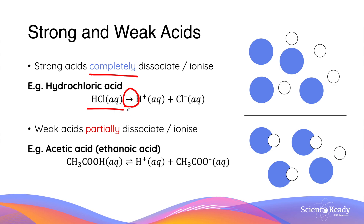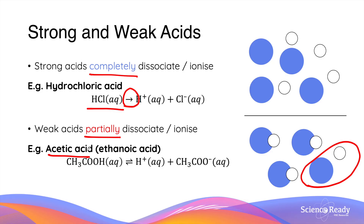In contrast, weak acids partially dissociate. If there are four molecules of weak acid, only some — not all — molecules would dissociate to produce hydrogen ions. As you can see, only one molecule dissociates. An example of a weak acid is acetic acid, which is found in vinegar. Dissociation reactions of weak acids are always reversible, so a double arrow is used in the chemical equations. Since dynamic equilibria only occur and apply in reversible reactions, the focus of this video will be on weak acids only.